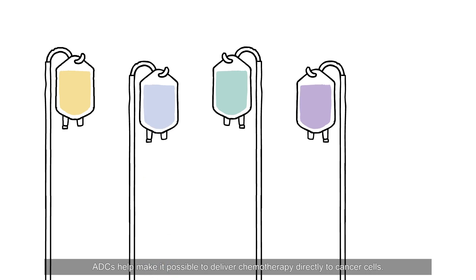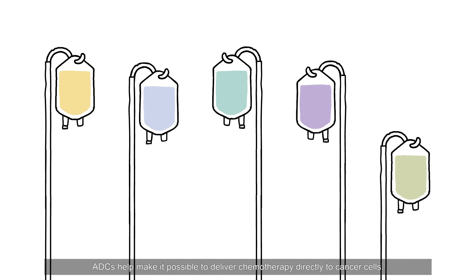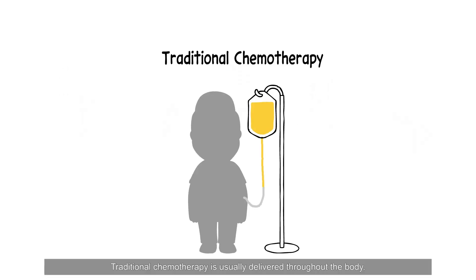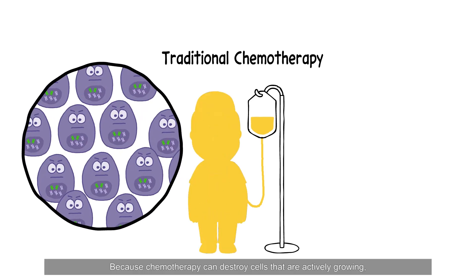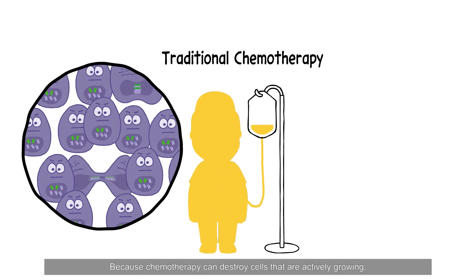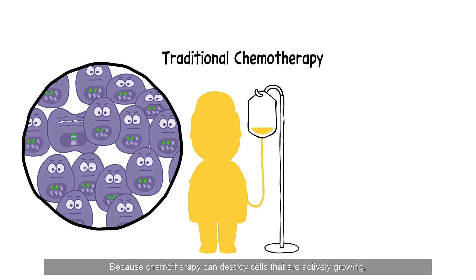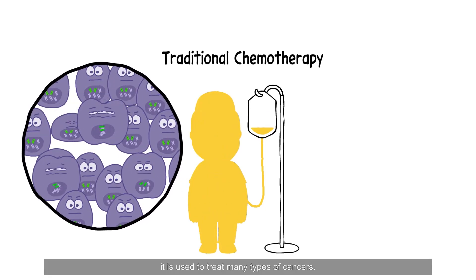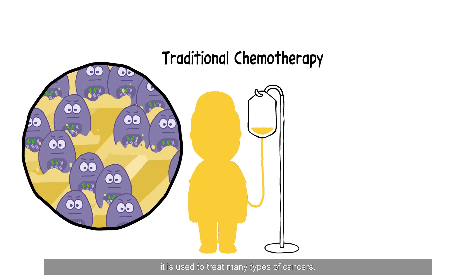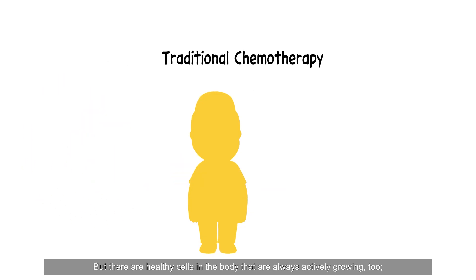ADCs help make it possible to deliver chemotherapy directly to cancer cells. Traditional chemotherapy is usually delivered throughout the body. Because chemotherapy can destroy cells that are actively growing, it is used to treat many types of cancers. But there are healthy cells in the body that are always actively growing, too.